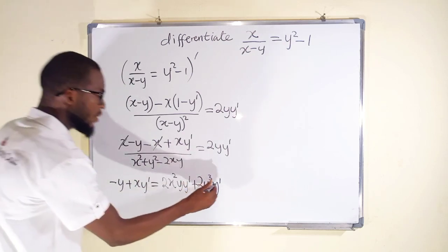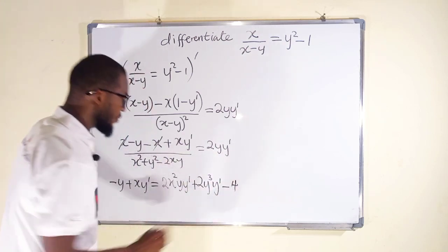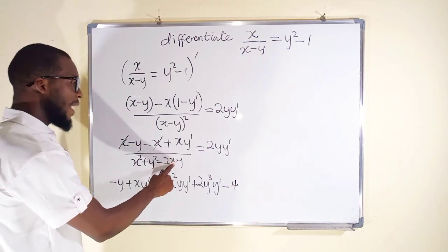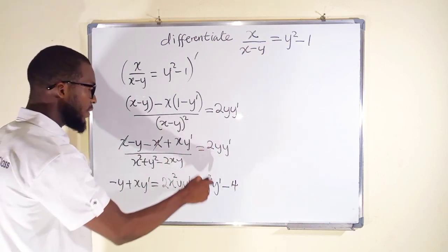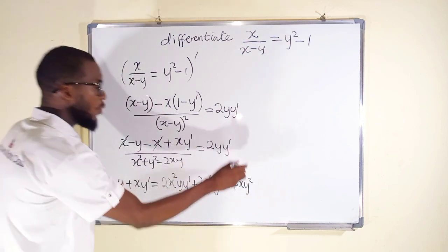Then the last one is negative. We have 2 times 2 is 4, xy squared, xy squared, then y prime.